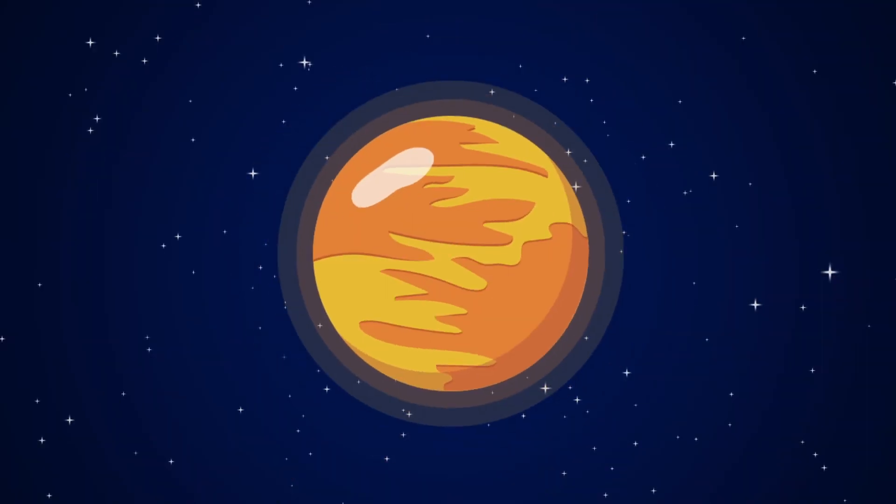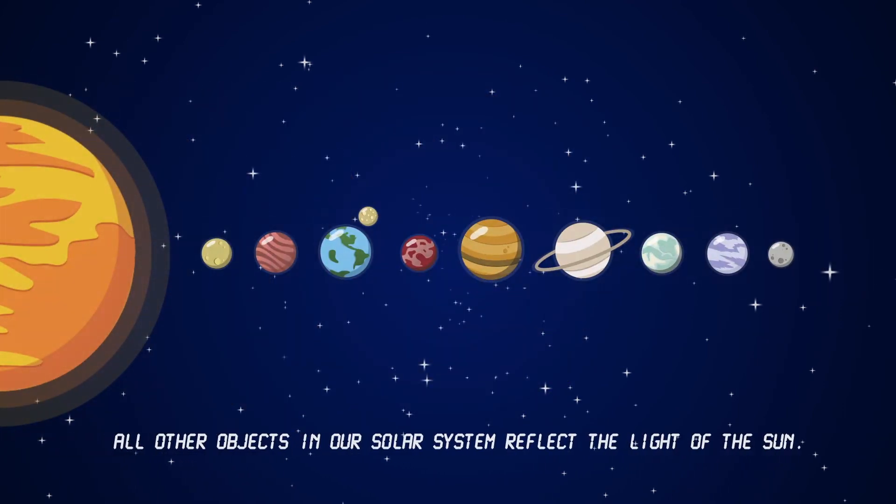The Sun is the only object in our solar system to shine with its own light. All other objects in our solar system reflect the light of the Sun.